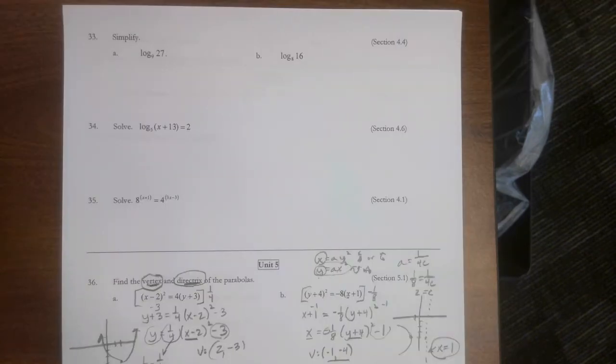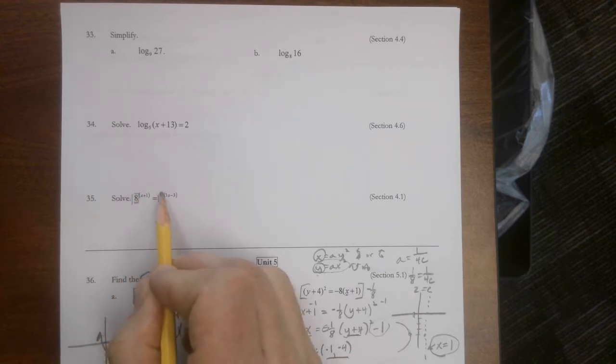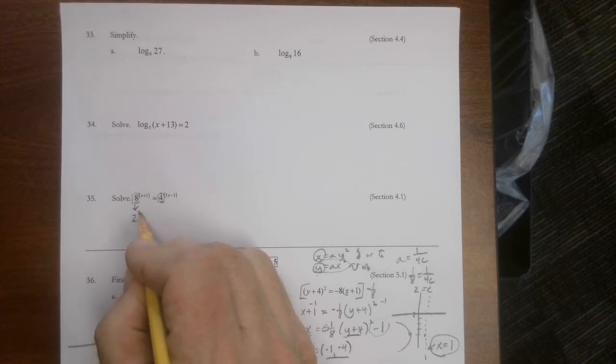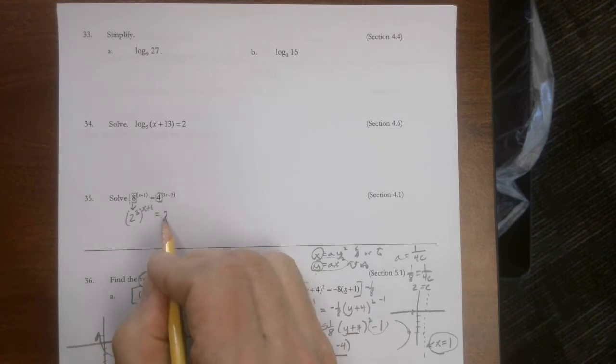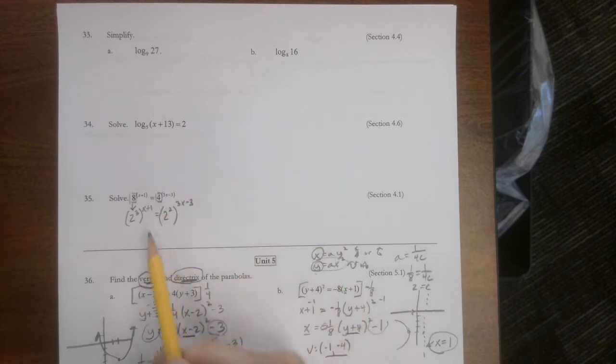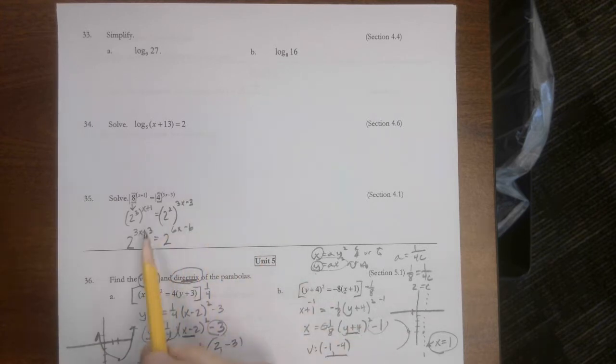All right, so this is the common bases happy places section. We got an 8 and we got a 4. What's my common base going to be? It's going to be a 2. So that's going to be 2 cubed to the x plus 1 power. That's going to be 2 squared to the 3x minus 3 power. Now I got to remember my basic rules. When you raise a power to a power, you multiply.